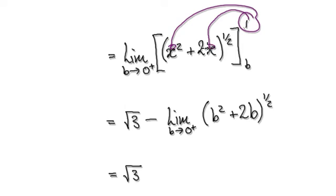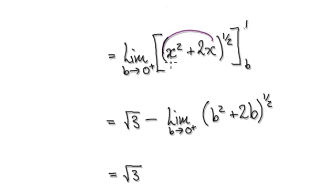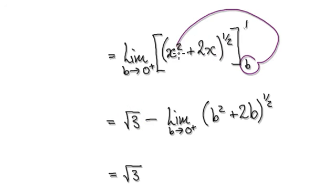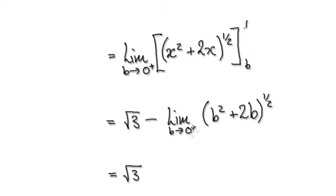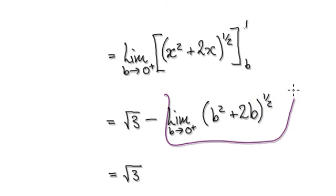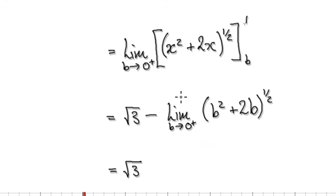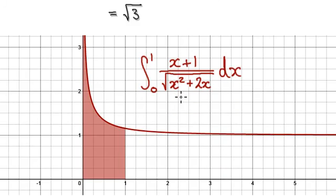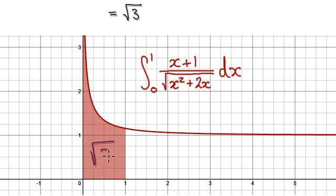Put 1 into here — that gives you 3 under the square root, so root 3. Then put b in. As b heads towards 0, this whole thing here is going to be 0: 0 times the square root of 0 will be 0. So this whole thing here will be 0, leaving you with an area of root 3.